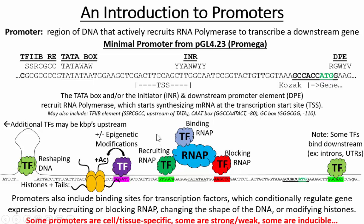I'm glossing over a lot of things here, but what I want to get across is that there are very many different types of promoters. There are about 20,000 genes in the human genome alone, and each of those genes has to be controlled independently and in response to different stimuli. That's what transcription factors allow the cell to do when they bind — they can turn a gene on or off. All of that is happening inside the promoter region.